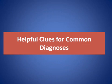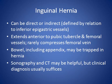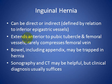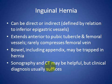Helpful clues for common causes: inguinal hernia can be direct or indirect, defined by its relation to the inferior epigastric vessels. It extends anterior to the pubic tubercle and femoral vessels, and rarely compresses the femoral vein. Bowel including the appendix may be trapped in the hernia. Sonography and CT may be helpful, but the clinical diagnosis usually suffices.